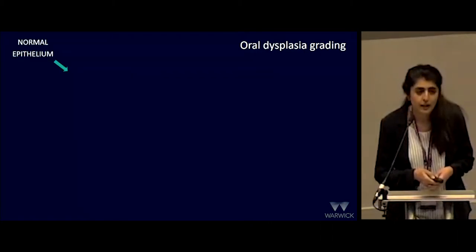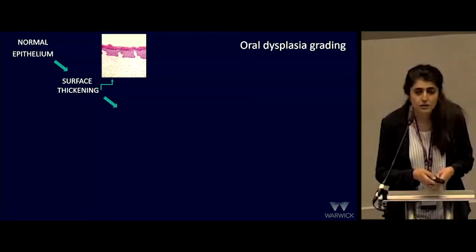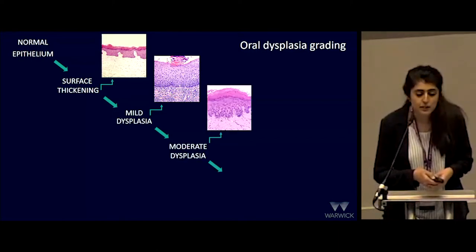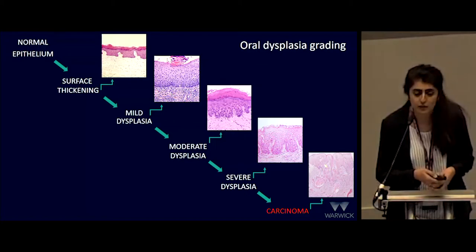Conventional oral dysplasia grading is achieved by histological analysis from a tissue sample obtained from a biopsy of the lesion. Initially, the epithelium may undergo surface thickening, and if exposed to certain irritants and carcinogens, the cells can undergo cytological atypia and genetic alterations to form dysplasia. There are three different grades: mild dysplasia can progress to moderate, moderate can progress to severe, and if left unmanaged, this can develop into a cancer.